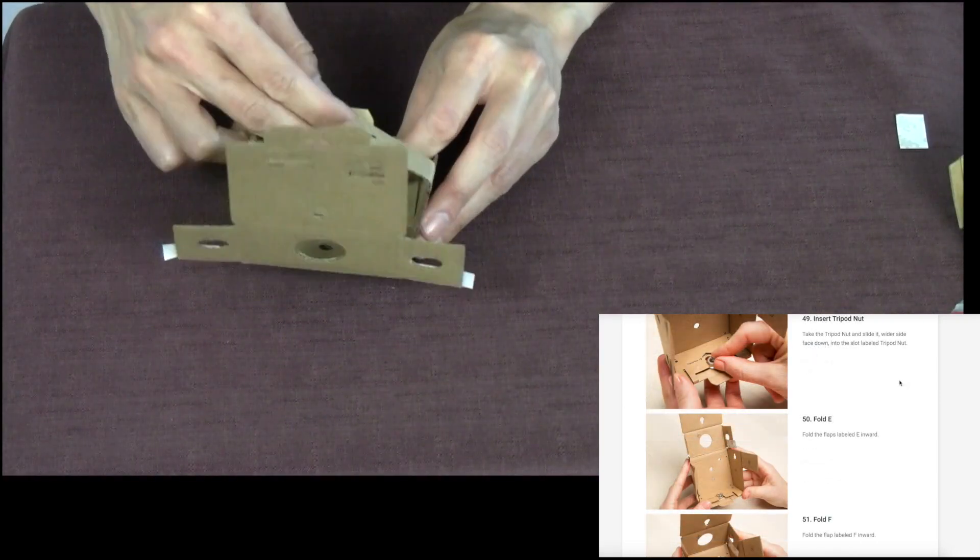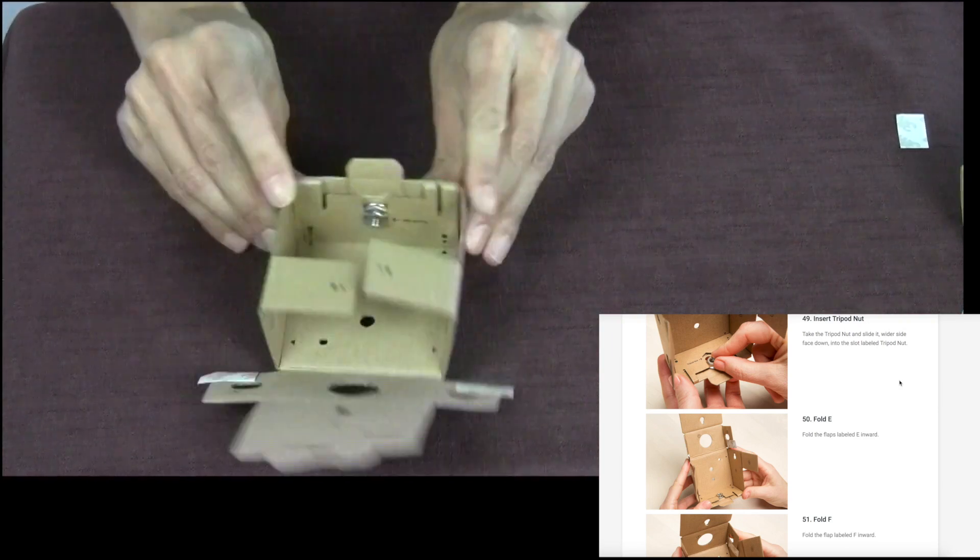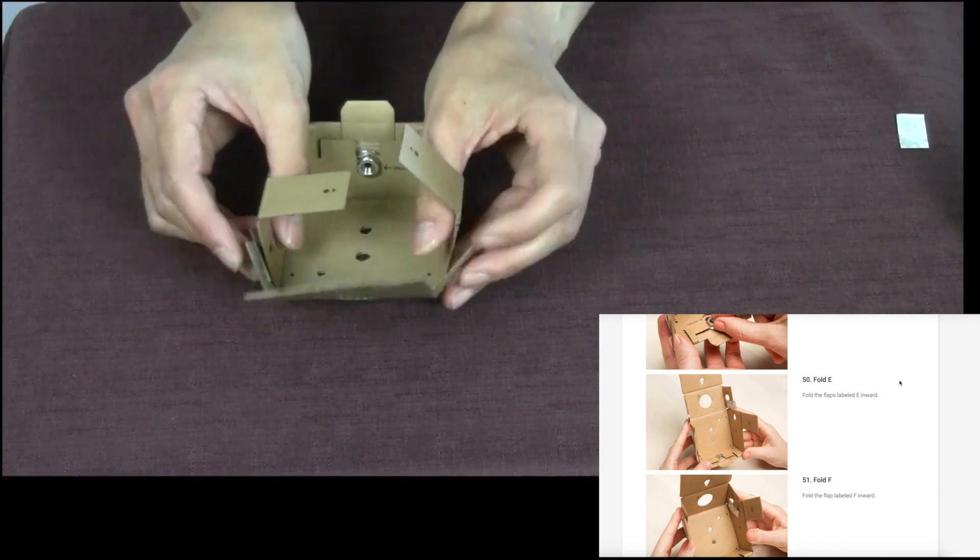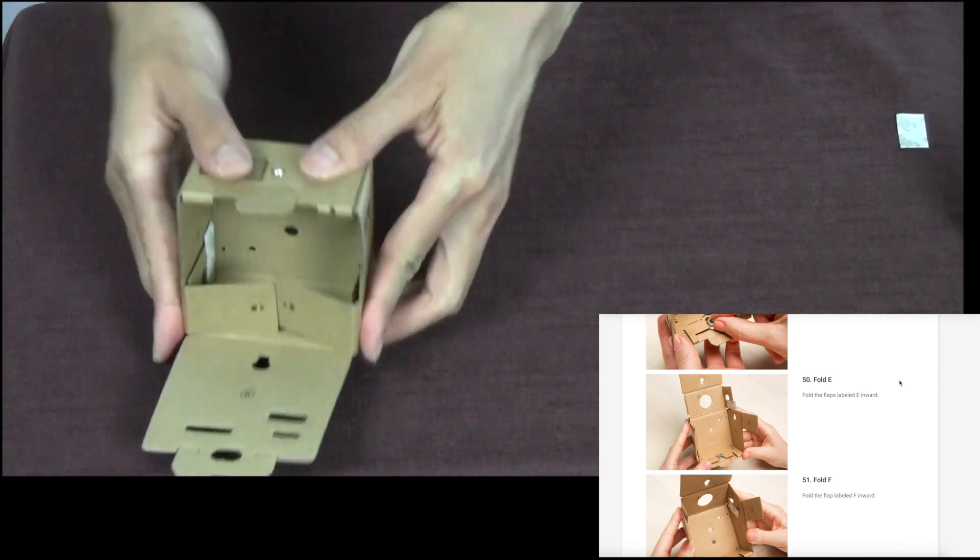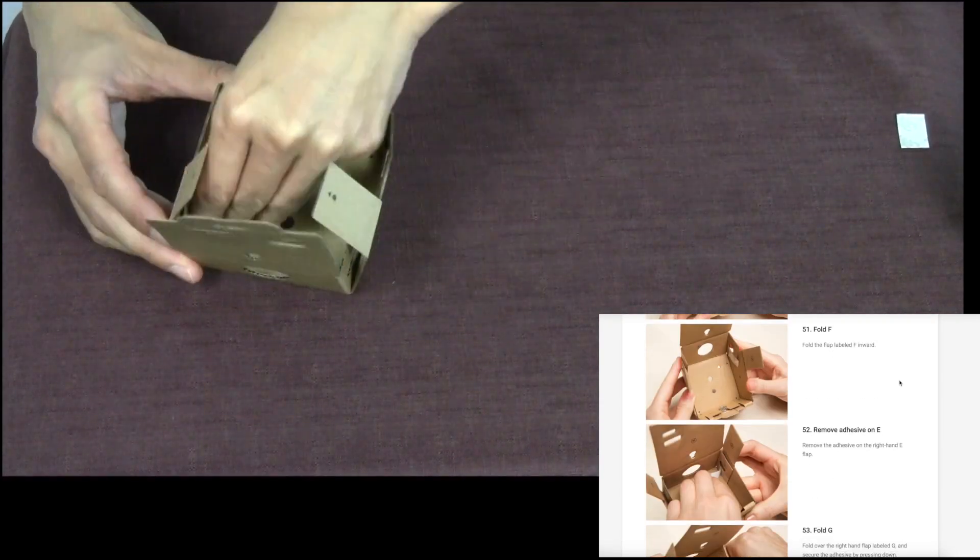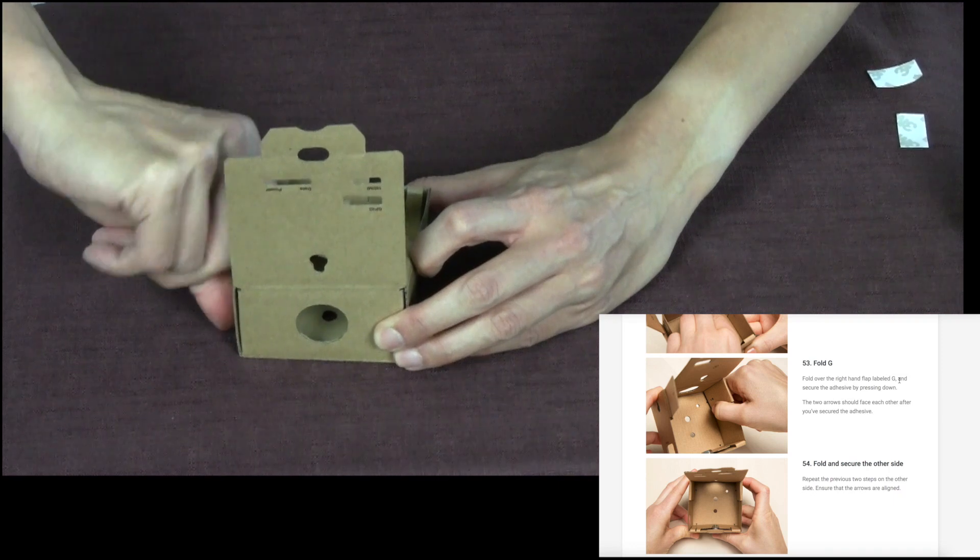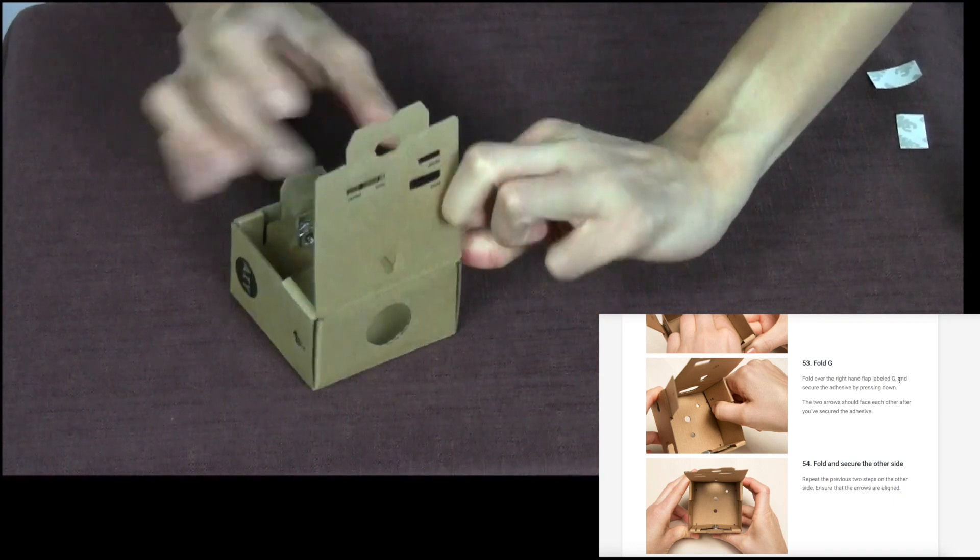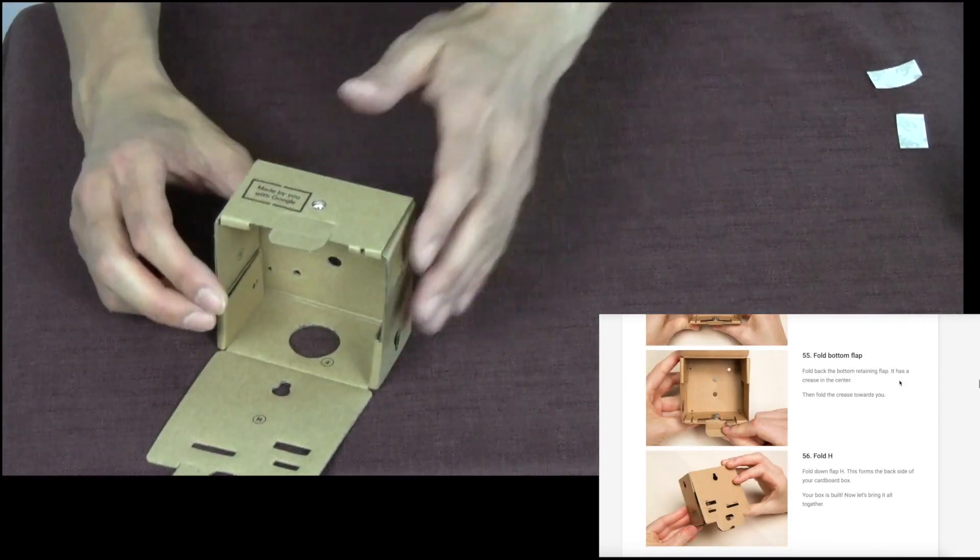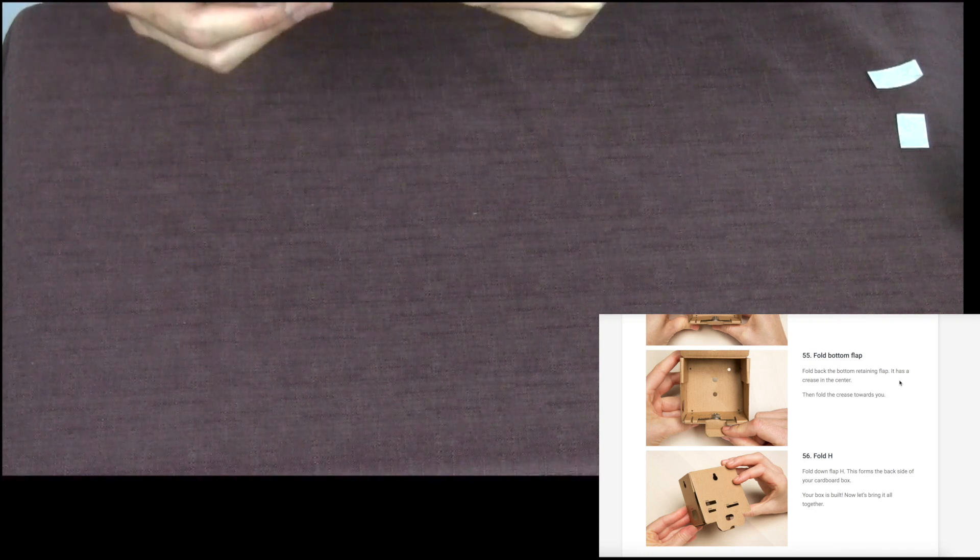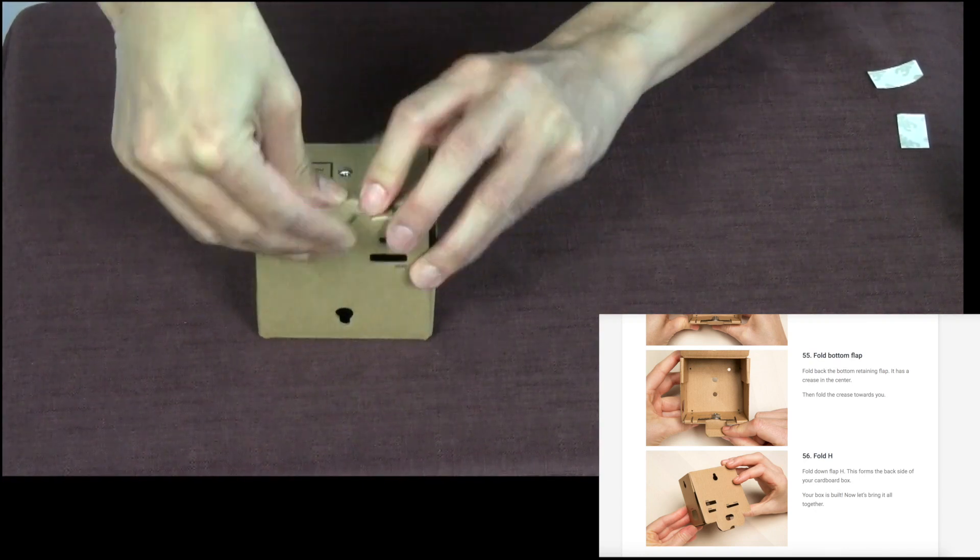Insert the tripod nut. Fold E in and fold F. The E goes inside right here. And then remove the adhesive on E. Fold over the right flap labeled G and the arrows should face each other. The arrows are facing each other. Secure the other side and then fold the bottom flap. Fold down H. Now that we've got our outside box built and our internal boards in the internal frame, we're going to put it together.